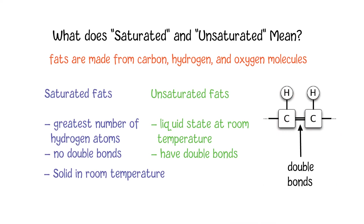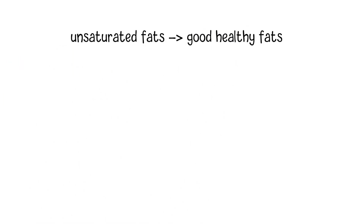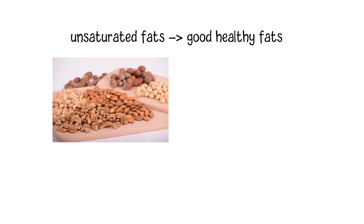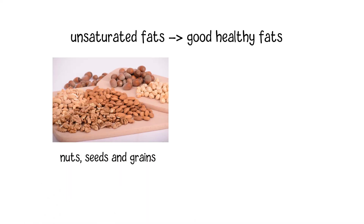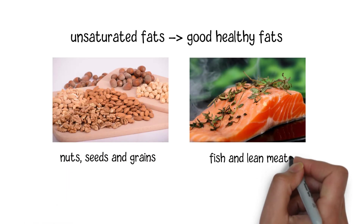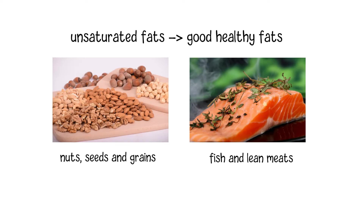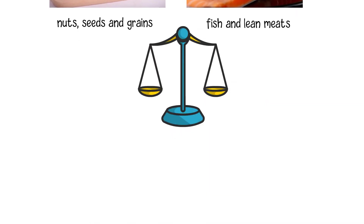Generally, unsaturated fats are considered good healthy fats. They are usually found in some plant-based foods such as nuts, seeds, and grains, and also in fish and lean meats. A proper amount of healthy fat can help to maintain the balance between the good and bad cholesterol in your blood.